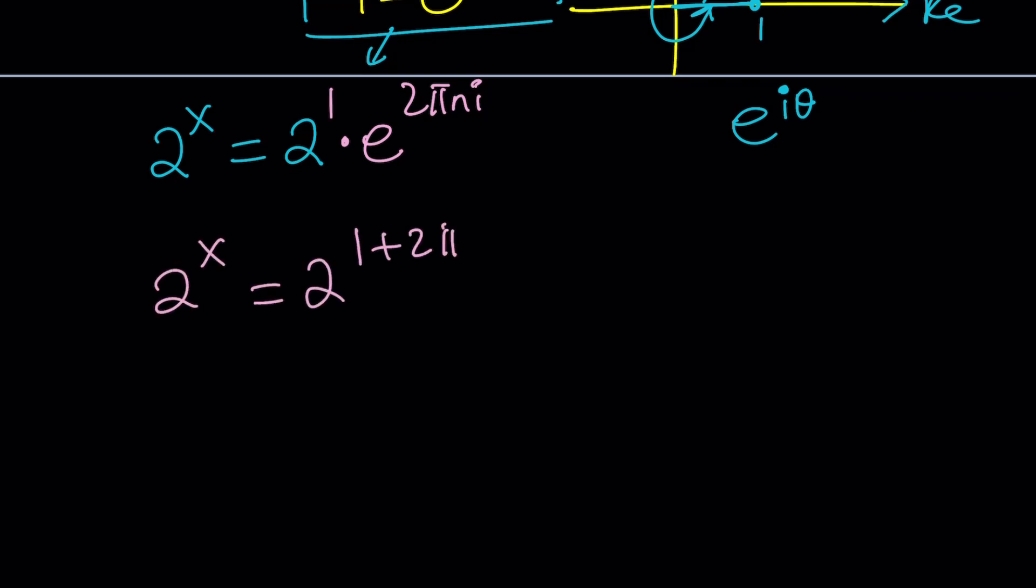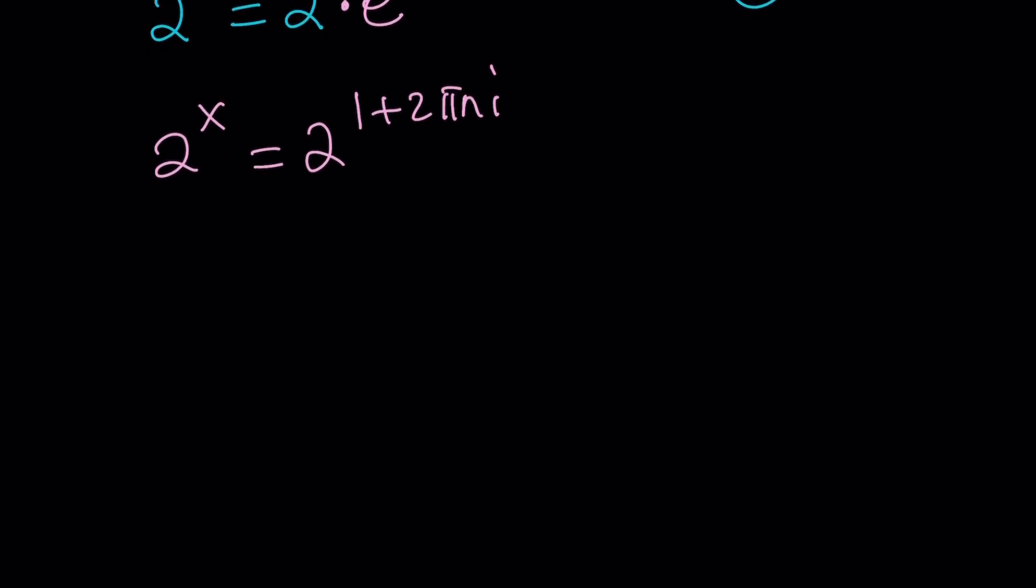Great. Let's go ahead and put a 1 here and do the exponentiation thing, you know, the rules and stuff. And, we get that. After natural logging both sides and so on and so forth, you're going to get something like this. x ln 2 equals (1 + 2πni) times ln 2.